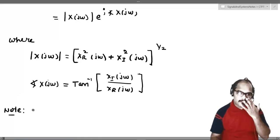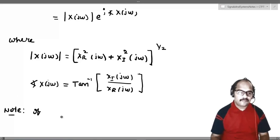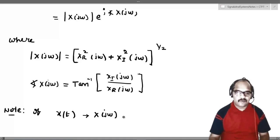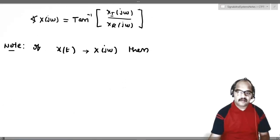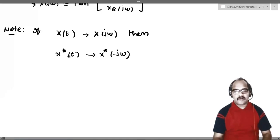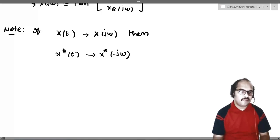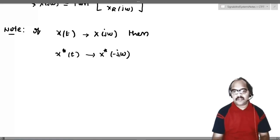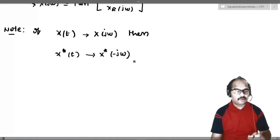Now a small note: if x(t) has X(jω) as its Fourier transform, then x*(t) will have X*(-jω) as the Fourier transform. This means if you take the conjugation of the signal x(t), then in the Fourier domain you must conjugate the Fourier transform and also reverse it — conjugation in time domain leads to conjugation and reversal in the Fourier domain.